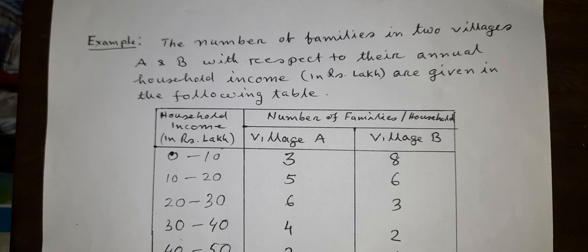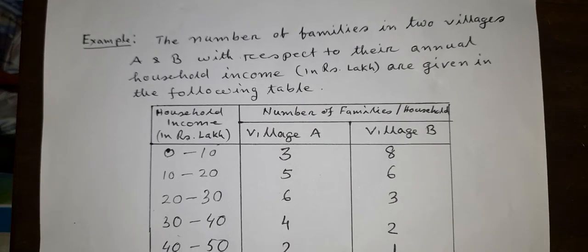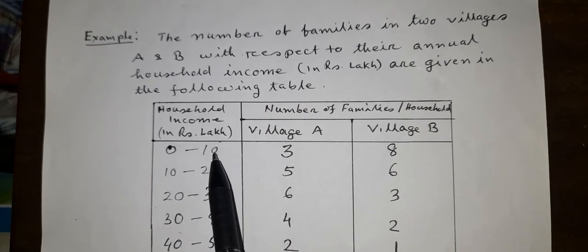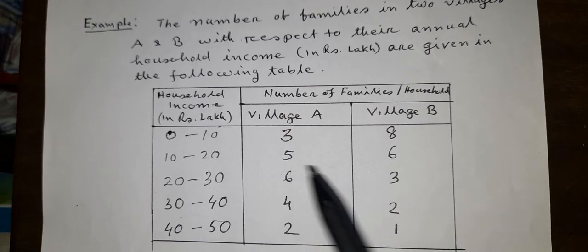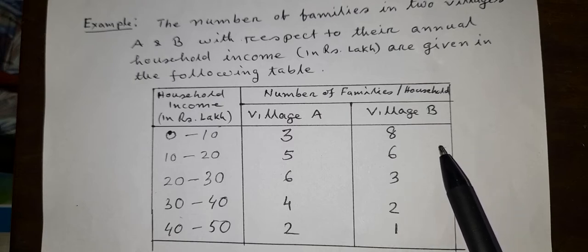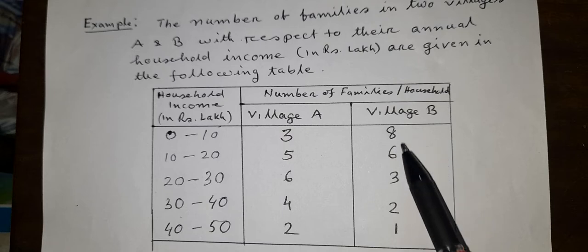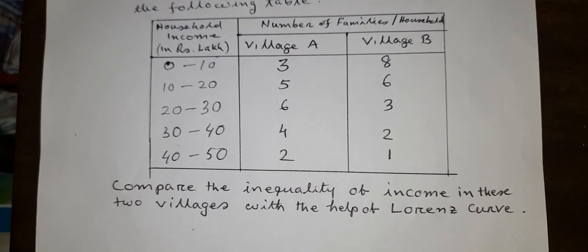Now we explain how to fit a Lorentz curve with the help of an example. Suppose the number of families in two villages A and B with respect to their annual household income in rupees lakh are given in the following table. Household income ranges are 0–10, 10–20, 20–30, 30–40, and 40–50. The number of families in village A are 3, 5, 6, 4, 2 and in village B are 8, 6, 3, 2, 1. We compare the inequality of income in these two villages with the help of the Lorentz curve.